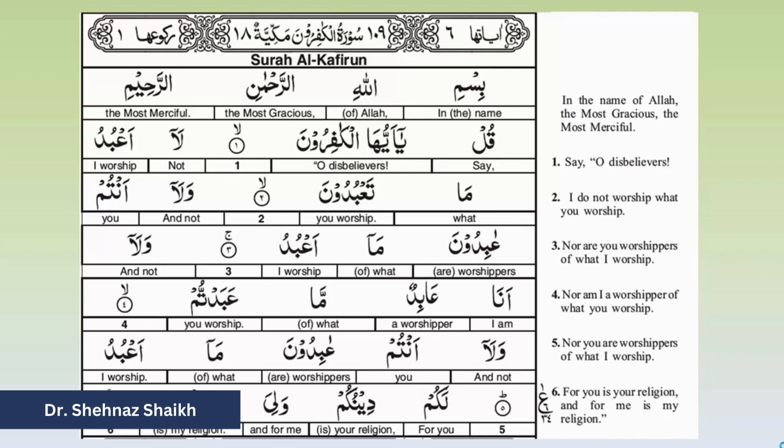Let's take the example of Surah Kafirun. Ar-Rahman means 'the most gracious' and Ar-Raheem means 'the most merciful'. Then 'Qul' means 'say'. Because of the word-for-word translation, whenever the word Qul appears, the student, reader, or reciter knows that it means 'say'. 'Ya ayyuhal kafirun' means 'O disbelievers'.